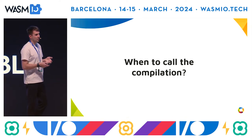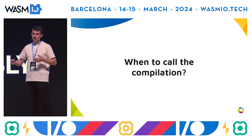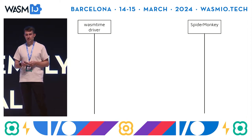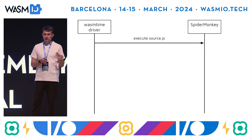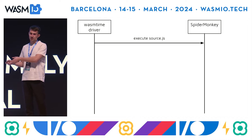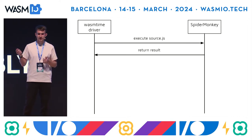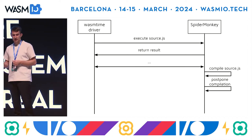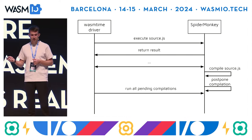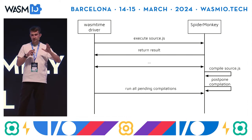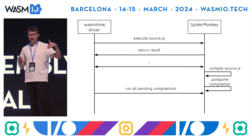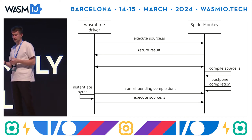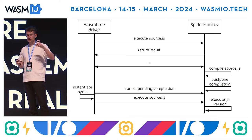The next question is when to trigger compilation. If we call it each time on each request, we'll have a lot of WASM modules and it will be very slow. We came up with an asynchronous compilation model: the Wasmtime driver instantiates the SpiderMonkey WASM module, you execute source.js many times, and at some point SpiderMonkey decides to compile source.js. We postpone this compilation to the future, and on some next run our Wasmtime driver can run all pending compilations from SpiderMonkey, instantiate all these bytes, and execute source.js with JIT — batching all compilation together.